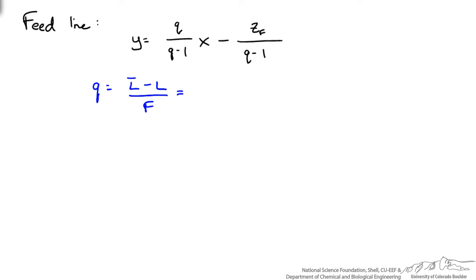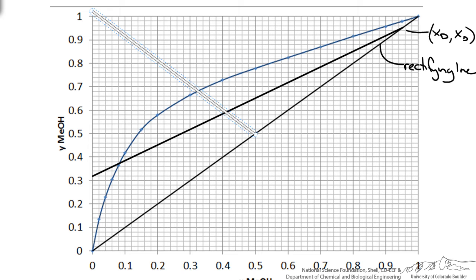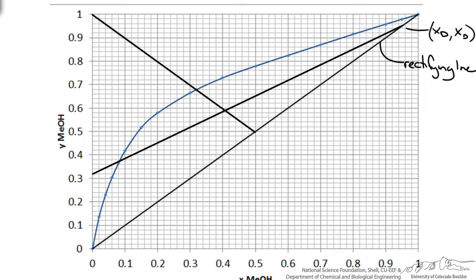We can write it as our L bar minus L. Remember those are the flow rates of the liquid in the rectifying and stripping sections. We are given this value, that is our fraction of the feed that is vaporized. We could plot our q line as negative x plus 1. Since we have an equal molar feed comes at 0.5 on the x equal to y line and goes to an intercept of y equals 1. That is our rectifying line and our feed line.